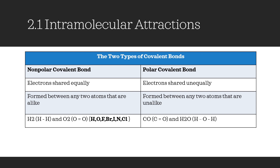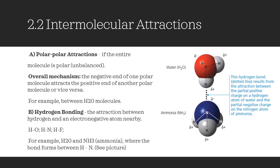For polar molecules, there are differences in electronegativity so that one atom pulls harder than the other atom, resulting in a partial plus or minus charge. Polar-polar attractions appear if these molecules are polar or unbalanced. The overall mechanism looks like this: the negative end of one polar molecule attracts the positive end of another polar molecule, or vice versa — for example, between water molecules. Next is hydrogen bonding. It is an attraction between hydrogen and an electronegative atom nearby — namely oxygen, nitrogen or fluorine. For example, H2O and ammonia, where the bond forms between hydrogen and nitrogen.